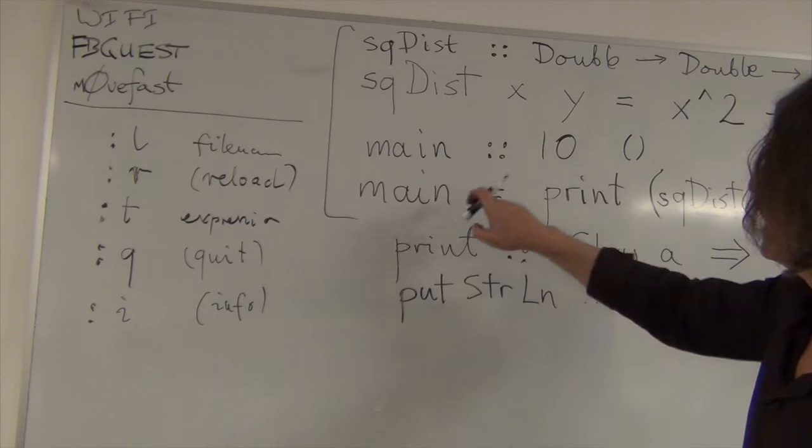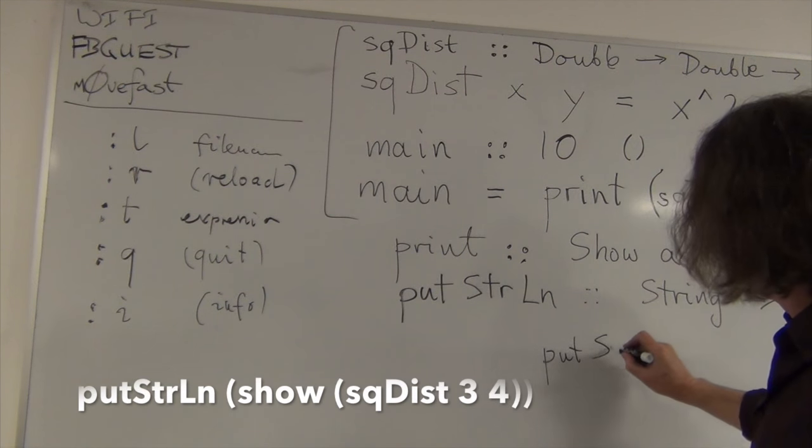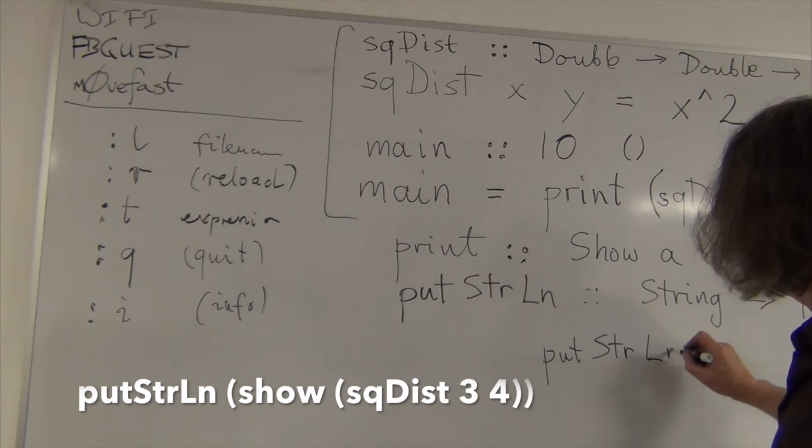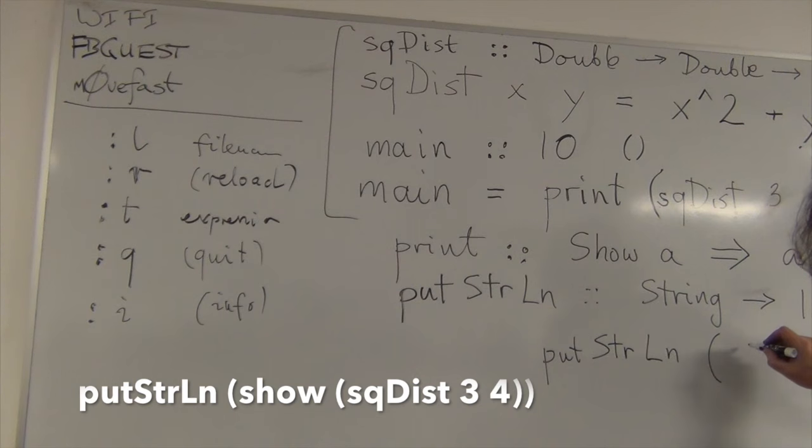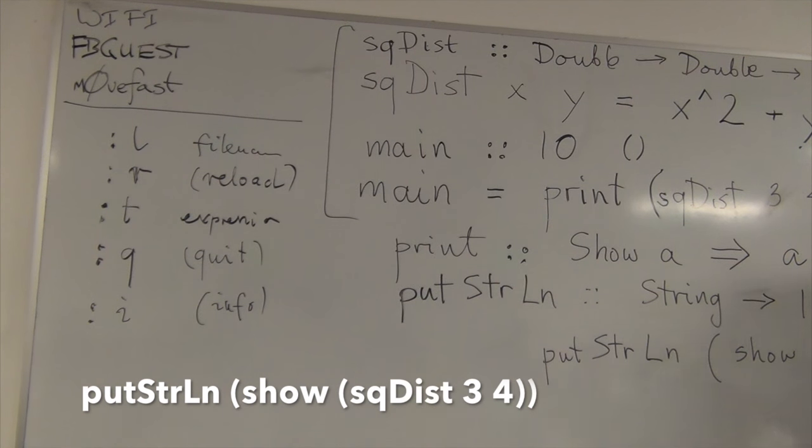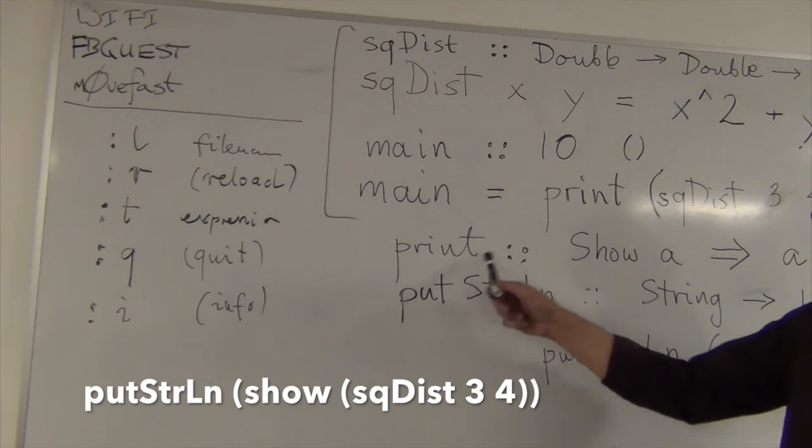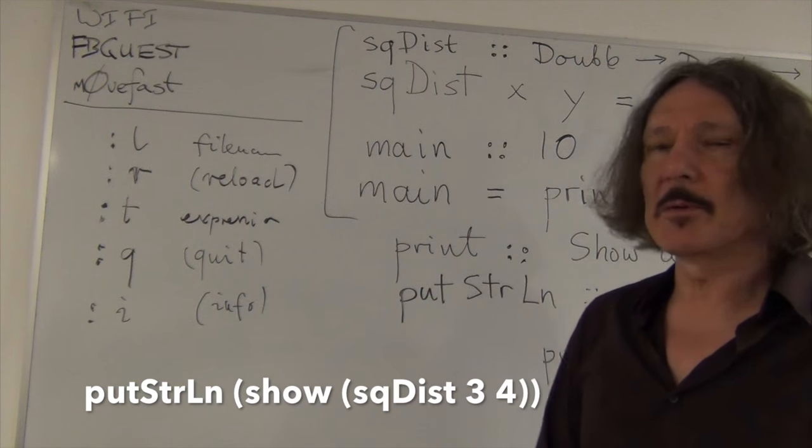in principle, instead of saying print this stuff, you could say, putster line and pass it show, call show explicitly on sq dist 3, 4. So why does GHCI choose that form for putster line and the other form for work? Oh no, no. GHCI doesn't choose anything. These are library functions. They have these signatures. They are fixed. In the library, I see. Library, library, yes. Okay. Yeah, that's part of the IO library. So, in main,